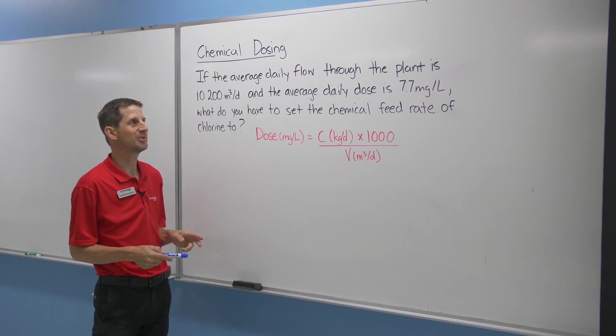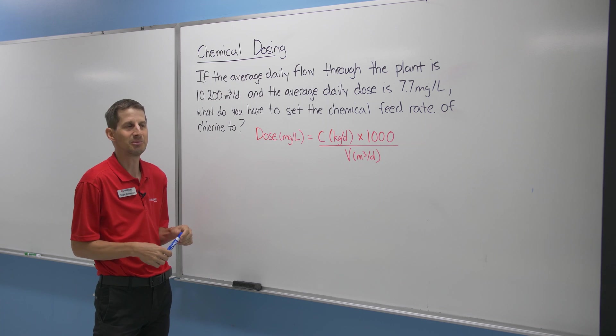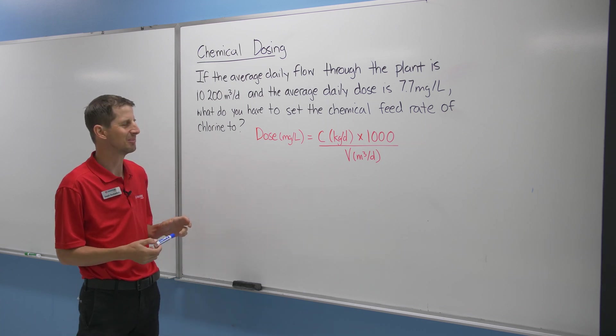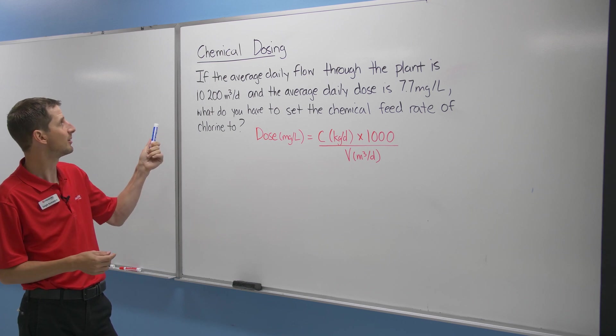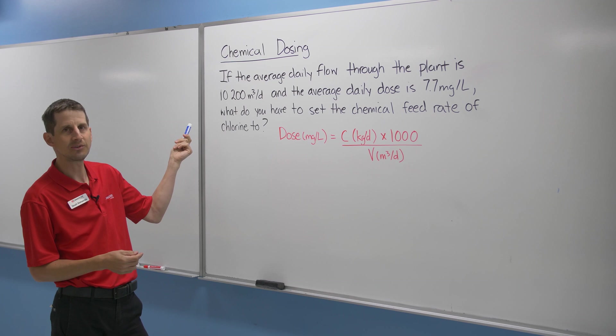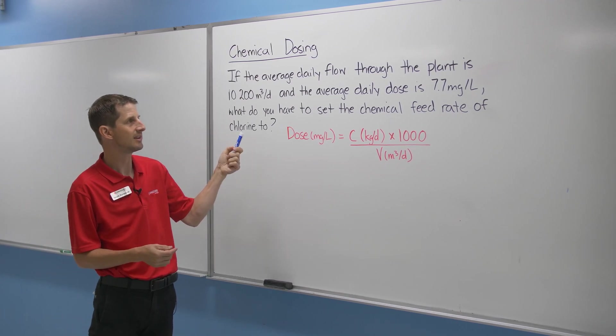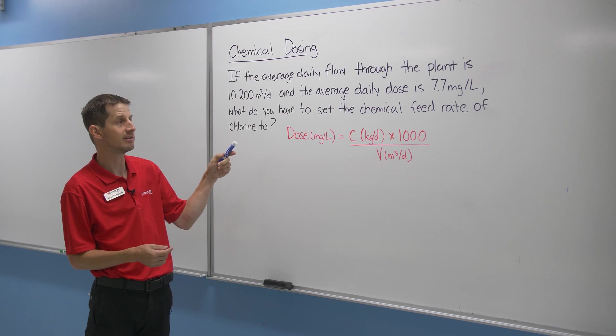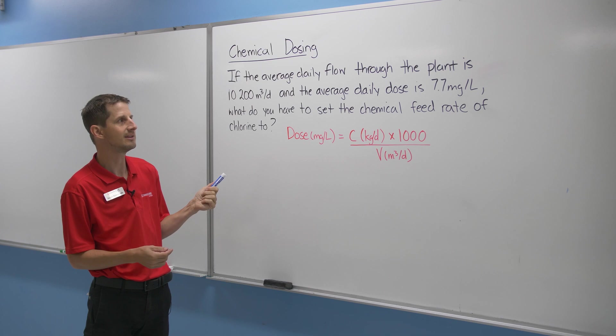Let's look at another chemical dosing problem that introduces some other things that you might encounter as barriers to completing your math questions successfully. So here we have our word problem. If the average daily flow through the plant is 10,200 cubic meters per day and the average daily dose is 7.7 milligrams per liter chlorine in this case, what do you have to set your chemical feed rate of chlorine to?